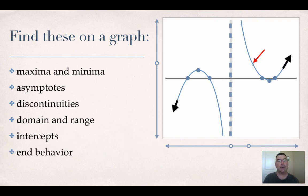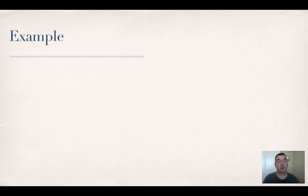And your end behavior - what's happening as the graph goes very far left and very far right. I've created an acronym to help you remember those six things. If you read down the first letter, it spells MADDIE: M-A-D-D-I-E. That'll help you remember what things to look for when you're graphing.